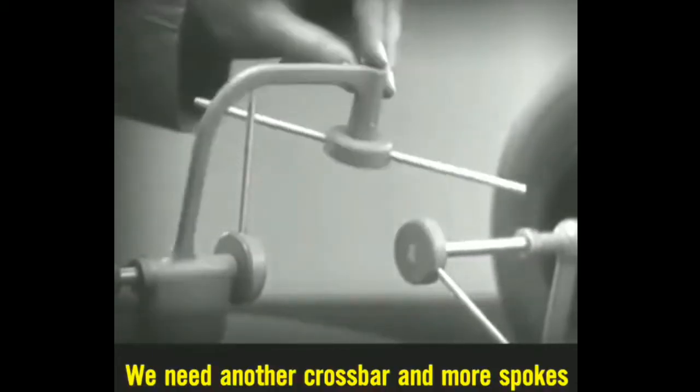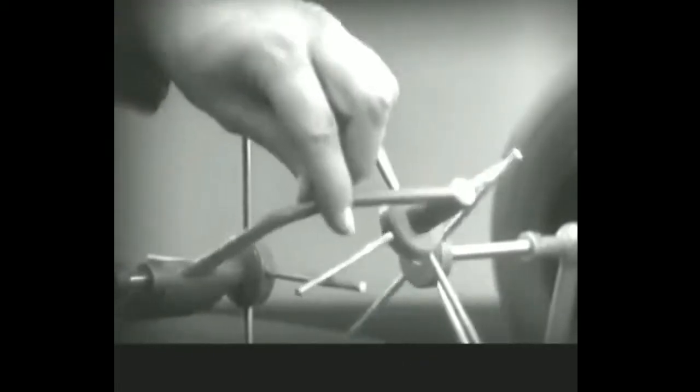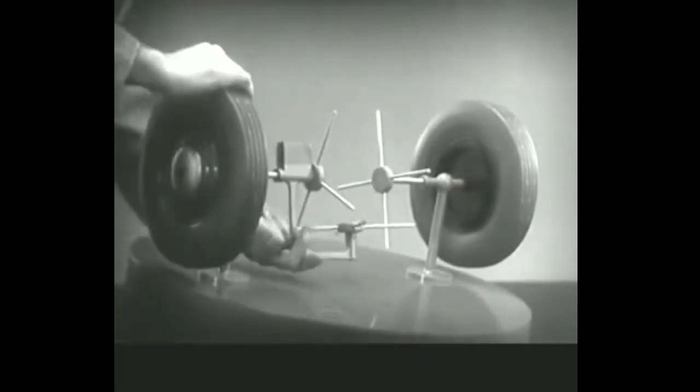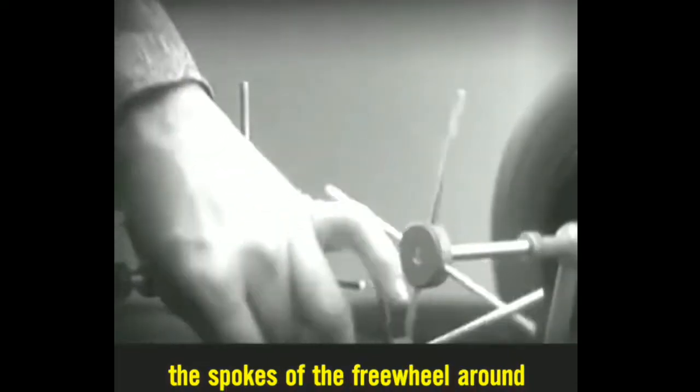We need another crossbar and more spokes to carry on the job. Now, when we stop one wheel, the crossbars will continue to push the spokes of the free wheel around.